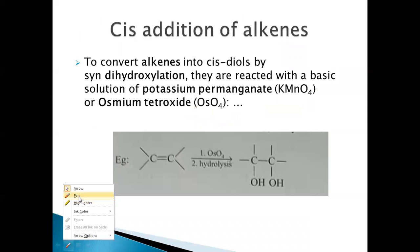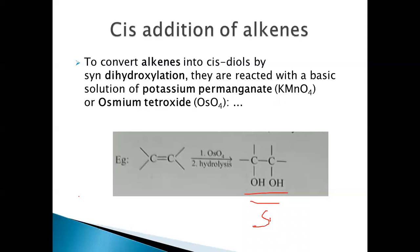Now let's see how CIS addition takes place — just by changing the reagents. The dihydroxylation takes place in the same manner, but CIS addition occurs. CIS diols are produced in the presence of potassium permanganate or osmium tetroxide.